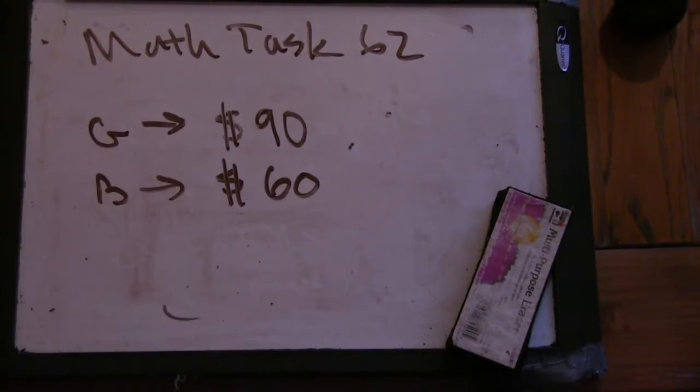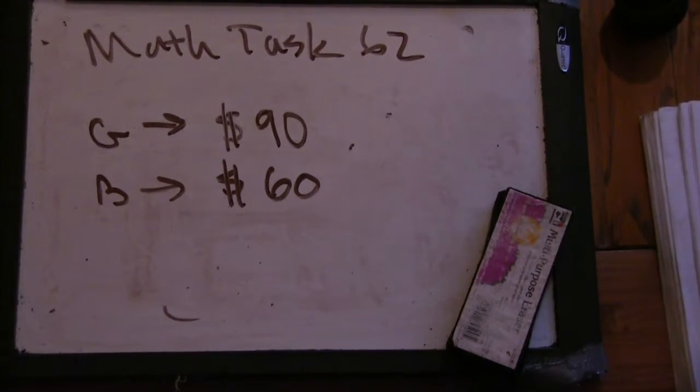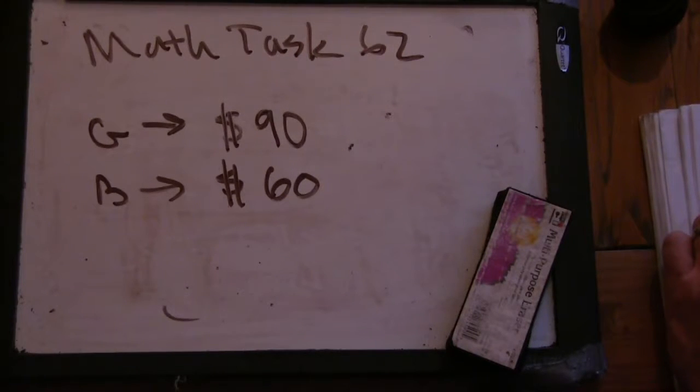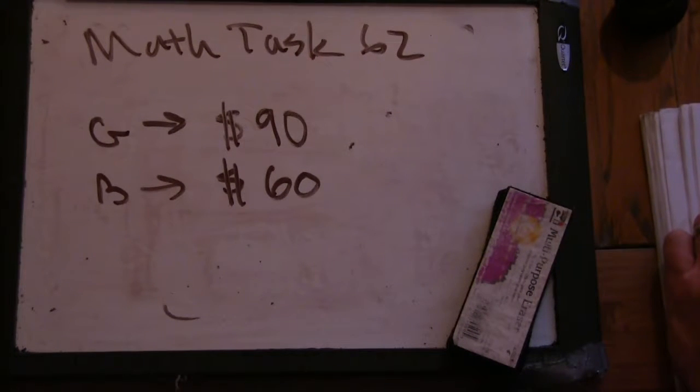Okay, good evening. Welcome to Math Task 62. This is an old math problem that you found tonight. It says all members of the math club paid the same amount for their end of year party. The girls paid a total of $90 and the boys paid a total of $60.